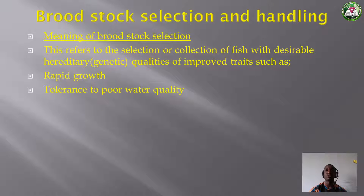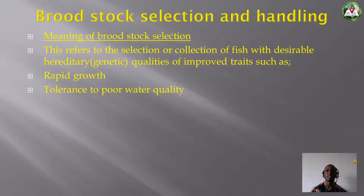Another trait is tolerance to poor water quality. Even if the water is dirty, the fish can survive. Catfish tolerates even bad water for some time. Compared to fishes like tilapia, catfish is very good at tolerating poor water quality — so it's a good trait.